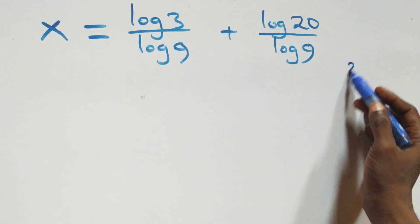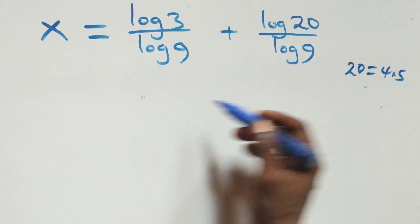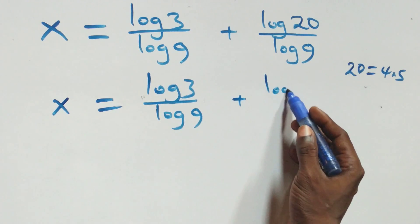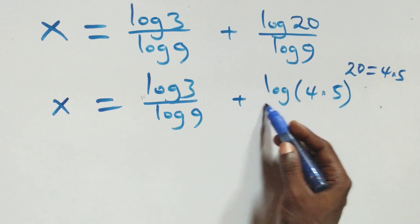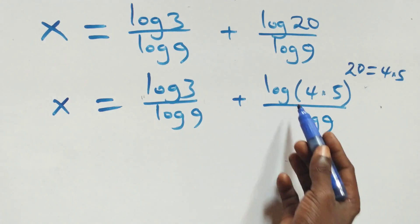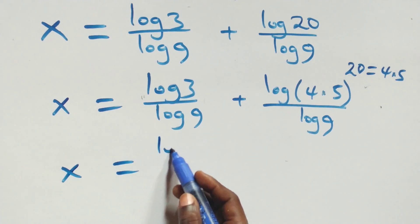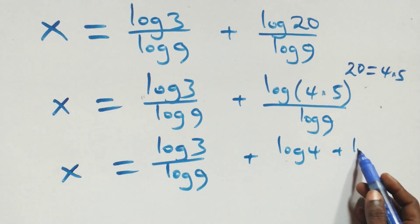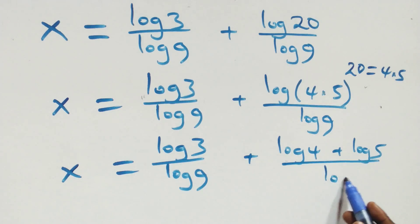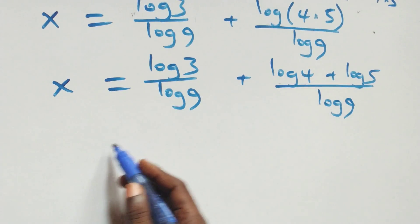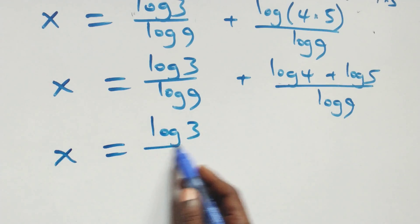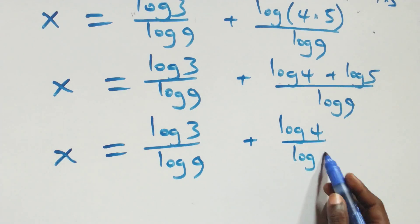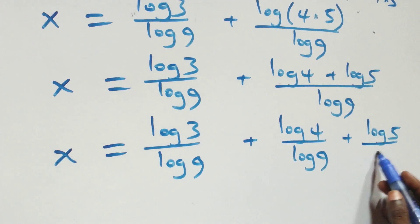Then we can write 20 as 4 times 5, so x equals log 3 over log 9 plus log(4 times 5) over log 9. Applying the product rule again: x equals log 3 over log 9 plus log 4 over log 9 plus log 5 over log 9.